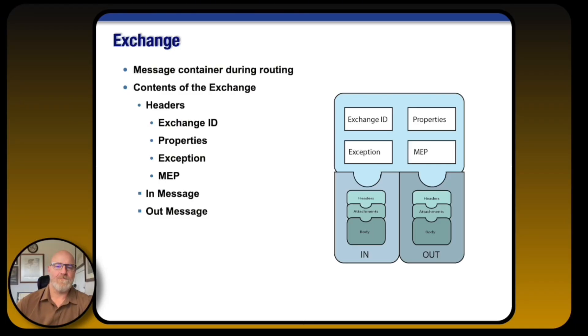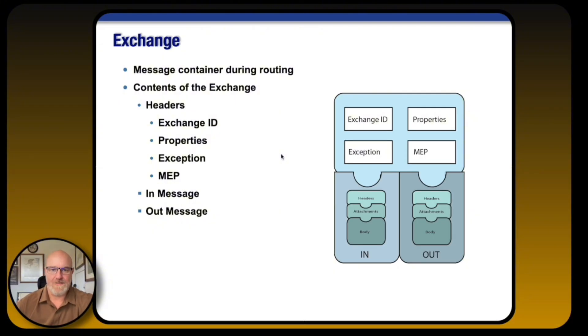Hello and welcome to Camel Essentials. Today we're going to talk about the Exchange — won't that be fun! Let's get after it. Let's start off by taking a look at the basic container of the Exchange. Here we have three major components: the headers, which include the exchange ID, properties, exception map, and then the in and out message.